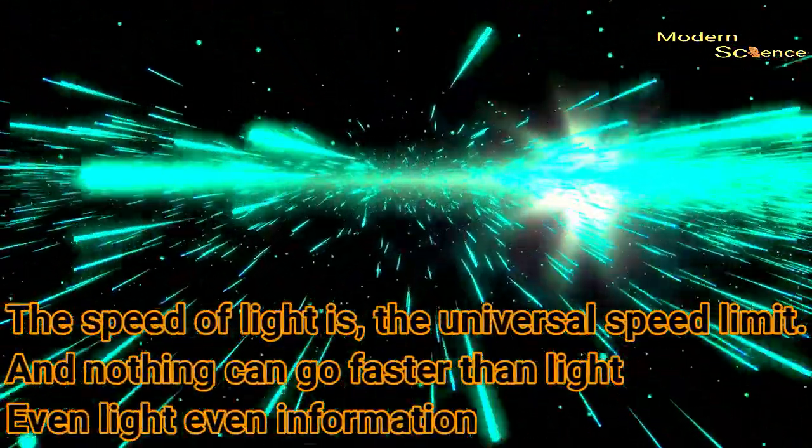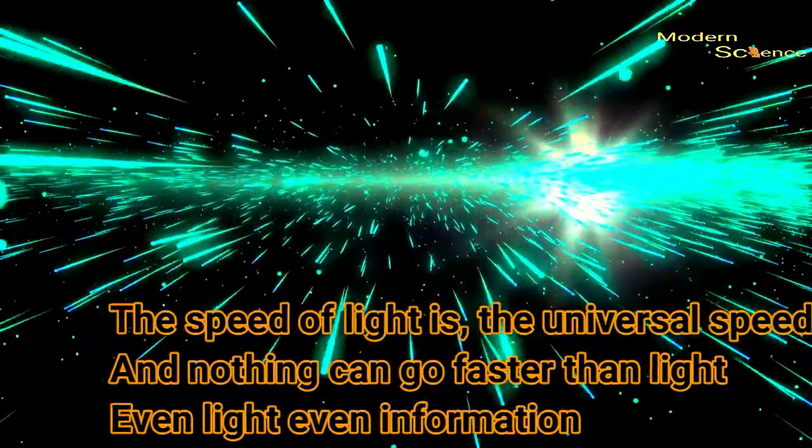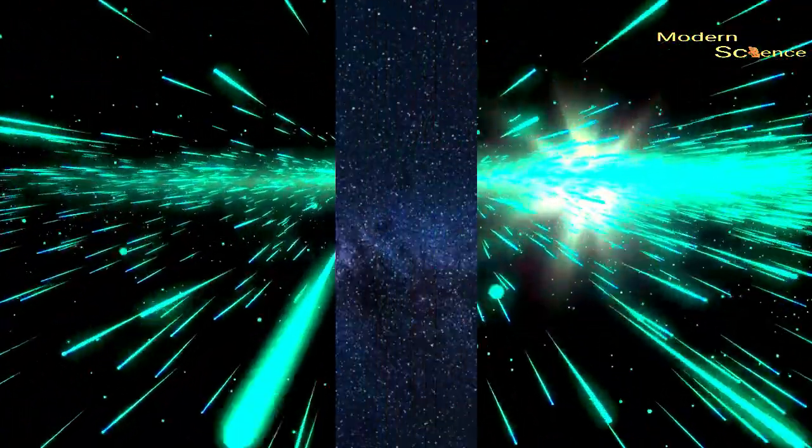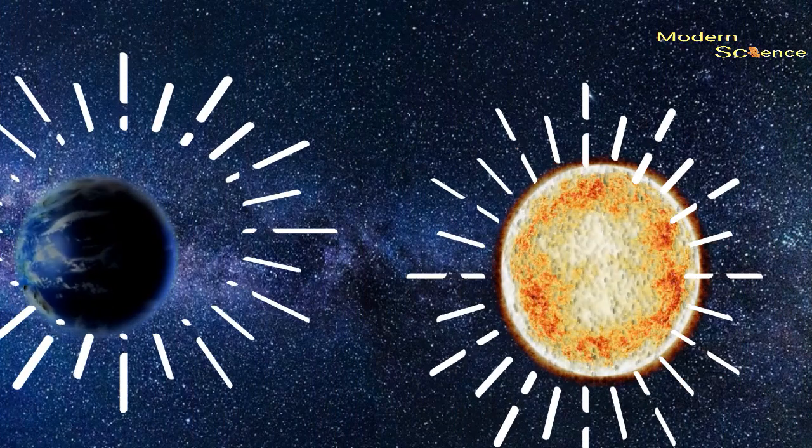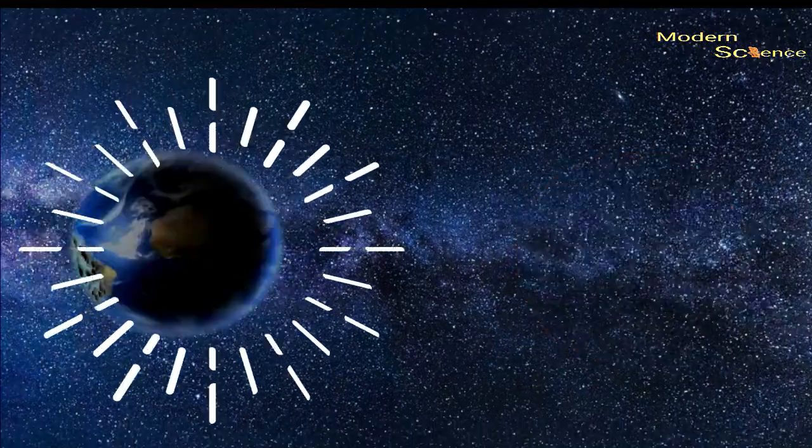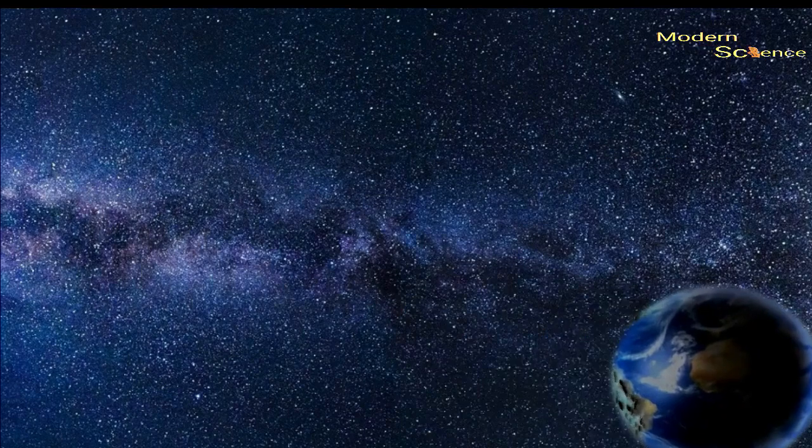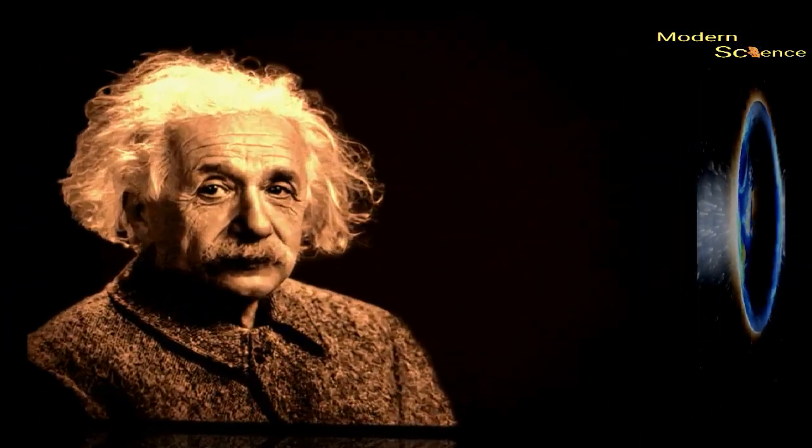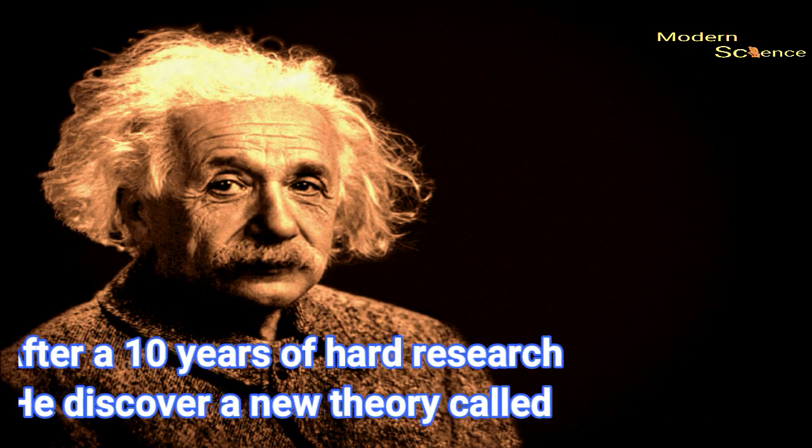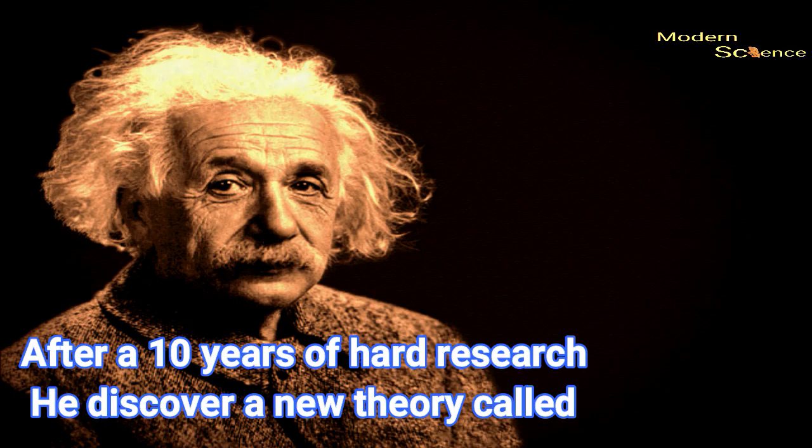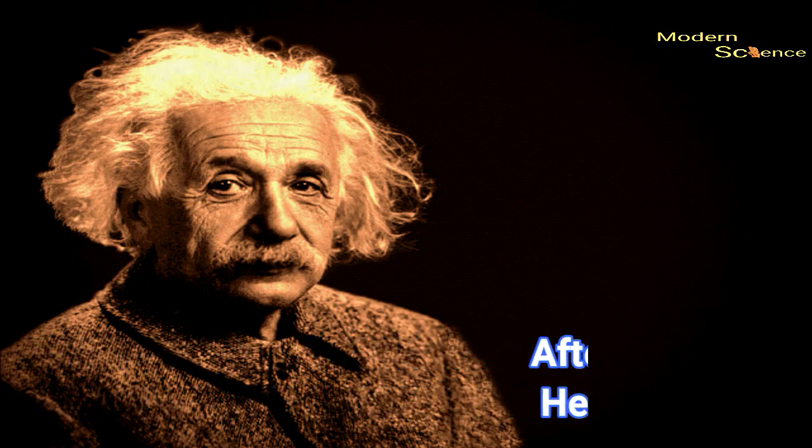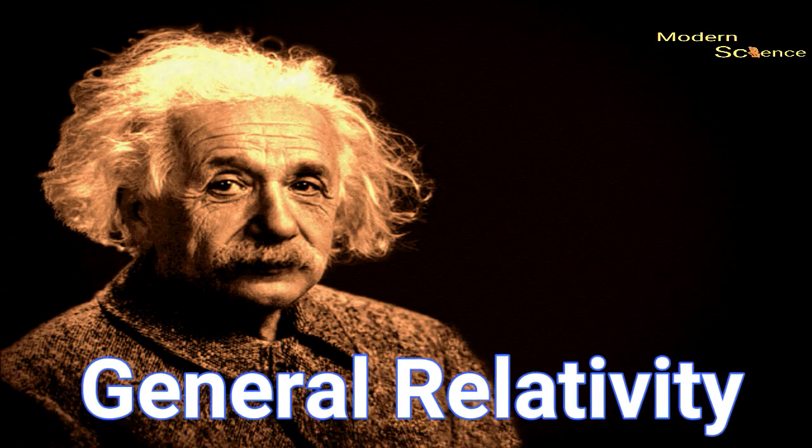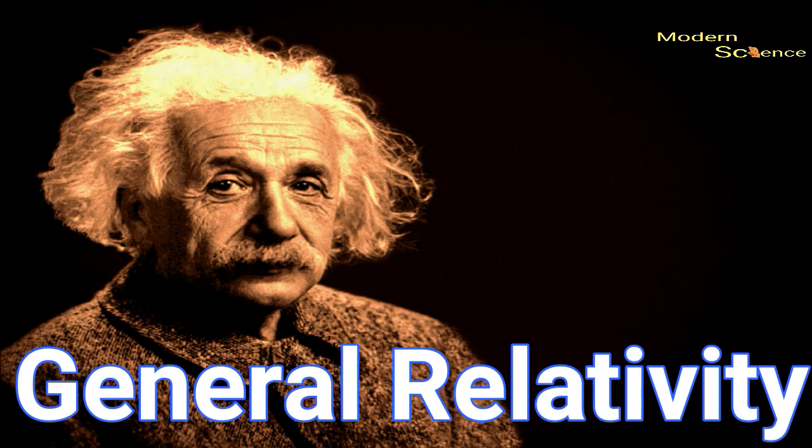But Einstein's special relativity told the speed of light is the universal speed limit, and nothing can go faster than the light, even information. So how can force called gravity go faster than light? How can Earth fly before the darkness coming due to Sun disappeared? The genius goes for a deep thinking about the solutions on this dark. And after 10 years of hard research, he discovered a new theory called general relativity, which is our present base of modern science.